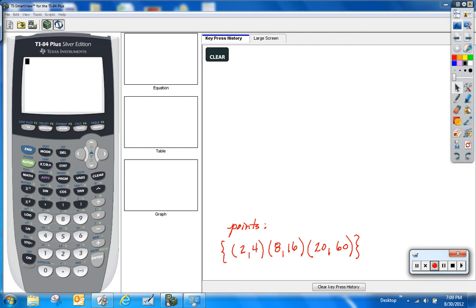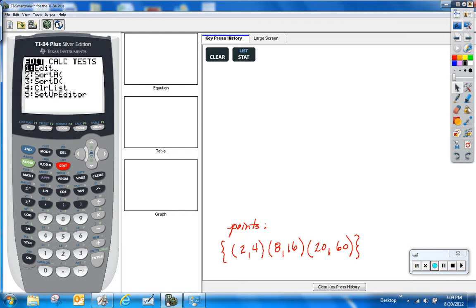Now to run a regression of any type I use the statistics menu which if you look at your calculator is found under the STAT key so press STAT. You will see this menu pop up. Anytime you need to enter new data or change the data you need to edit the data so that's why we choose the edit option under the STAT menu.